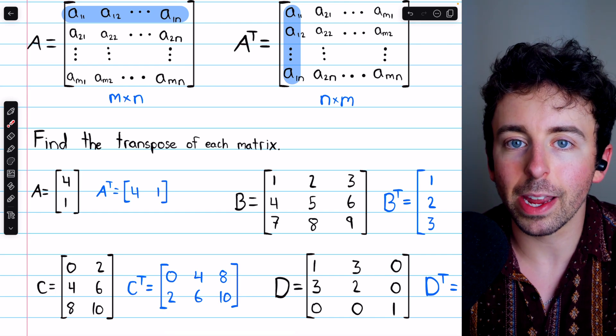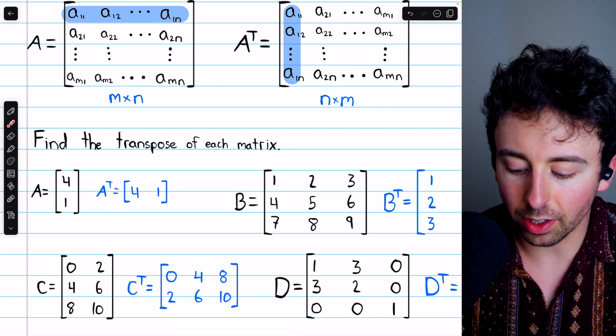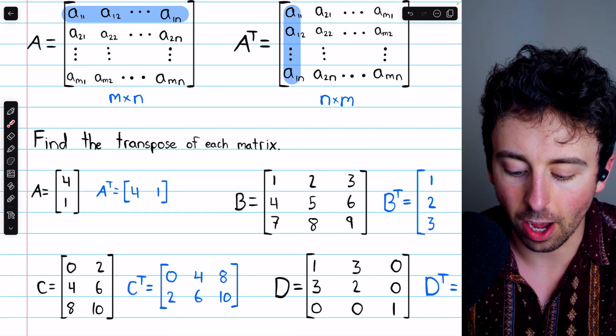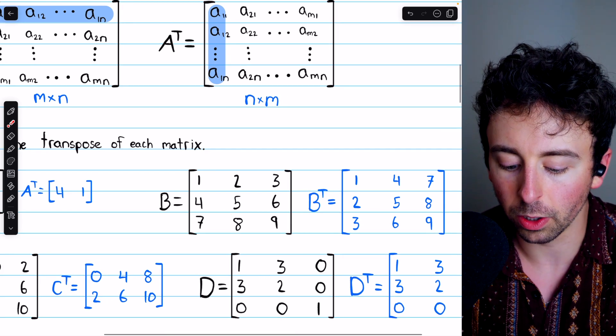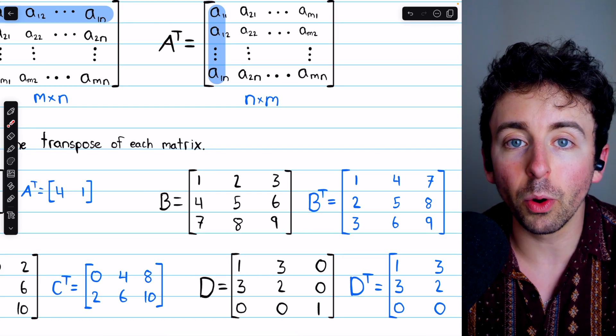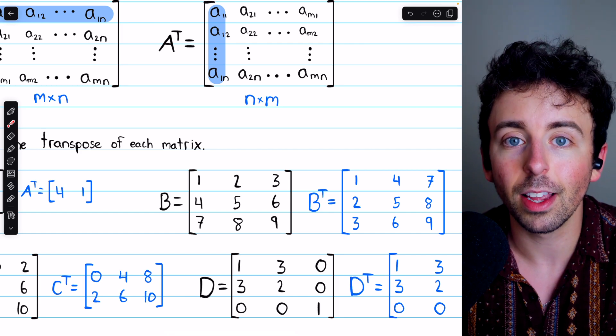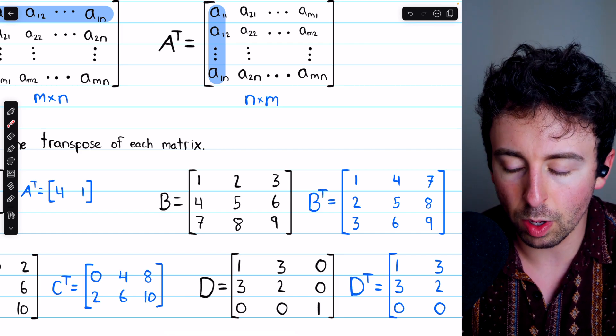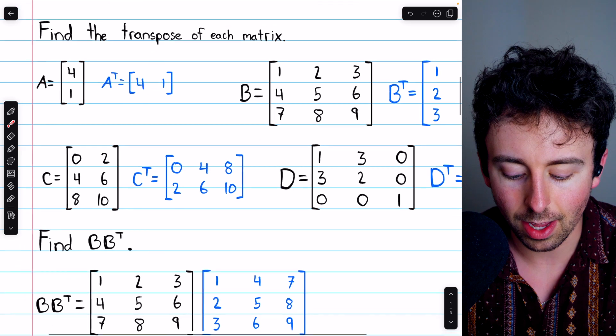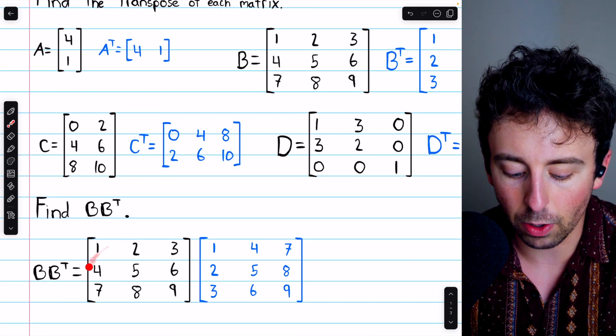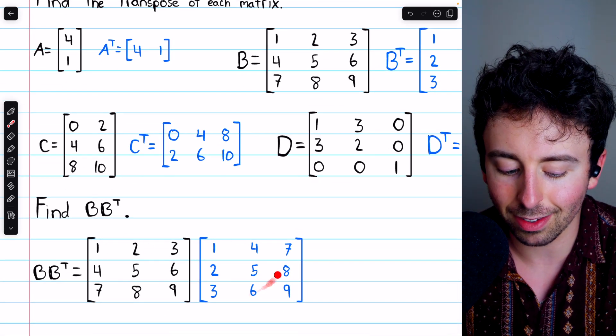Now, certainly, not every matrix is symmetric. For example, the matrix B is not symmetric. It's not equal to its transpose, but we can use transposes to construct symmetric matrices. For example, let's suppose we multiply the matrices B and B transpose. So here's B, and we're multiplying it by its own transpose.